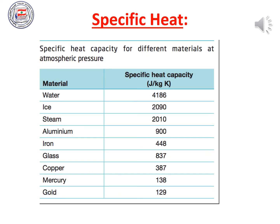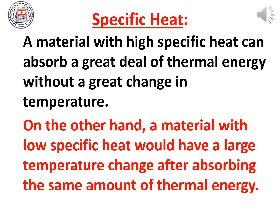Look at the table in front of you showing specific heat capacity for different materials at atmospheric pressure. To raise the temperature of one kilogram of water by one kelvin, you need 4,186 joules. For glass, you only need 837 joules. A material with high specific heat, like water, can absorb a great deal of thermal energy without a large temperature change. A material with low specific heat, like glass, will have a large temperature change after absorbing the same amount of energy.